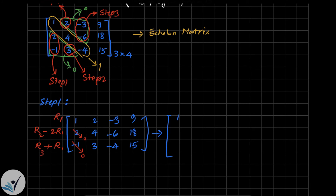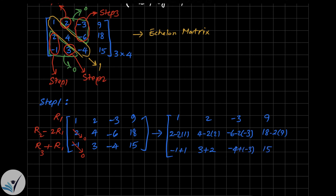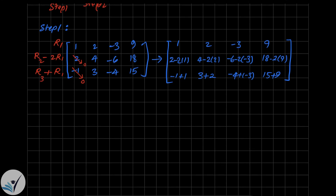On the first row: 1, 2, -3, and 9. On the second row: 2 - 2(1), 4 - 2(2), -6 - 2(-3), and 18 - 2(9). On the third row: -1 + 1, 3 + 2, -4 + (-3), and 15 + 9.